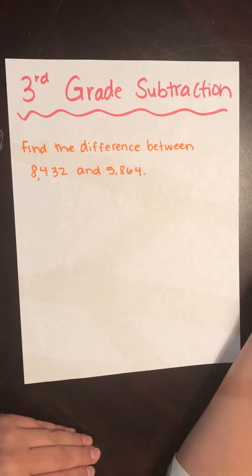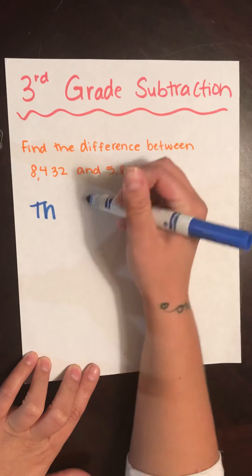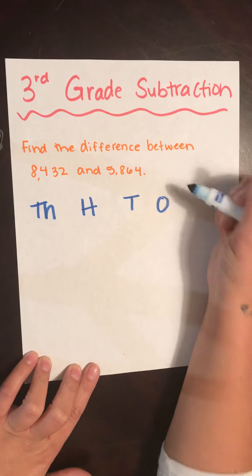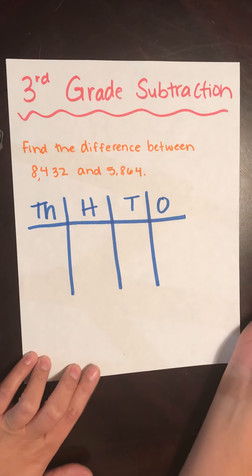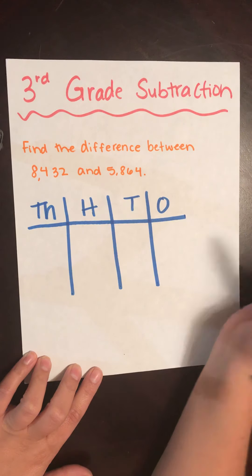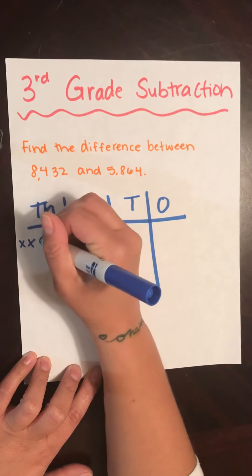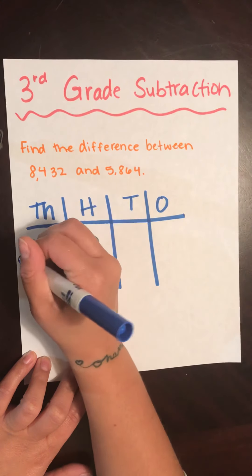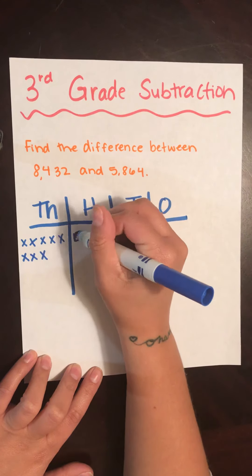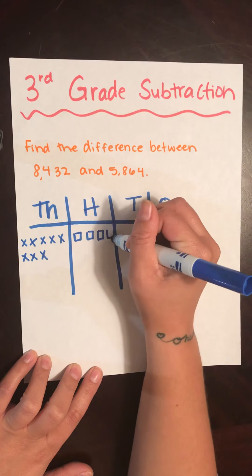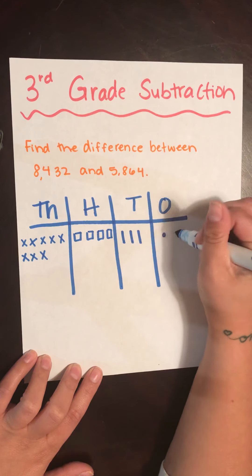The first method we're going to look at today is the place value chart method. So we're going to draw a place value chart. I need to start by doing that — here's my thousands, hundreds, tens, and ones. Now I need to draw my first number, which is 8,432. To draw 8,000 I need eight X's because X's are the symbol for 1,000: 1, 2, 3, 4, 5, 6, 7, 8. So this means 8,000. Now I have four hundreds: 1, 2, 3, 4. I have three tens: 1, 2, 3, and two ones: 1, 2.